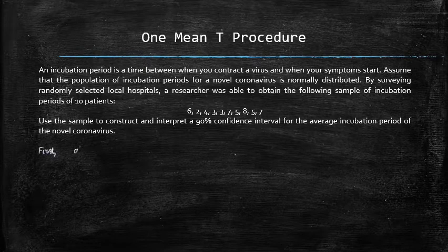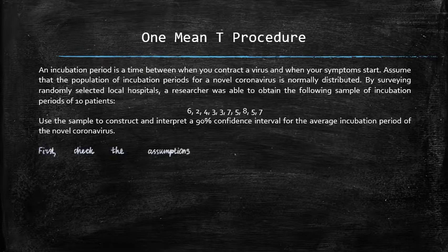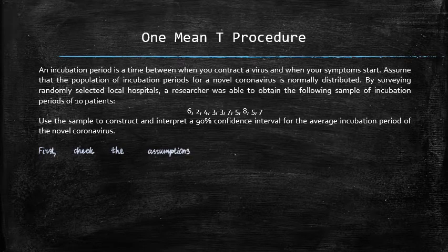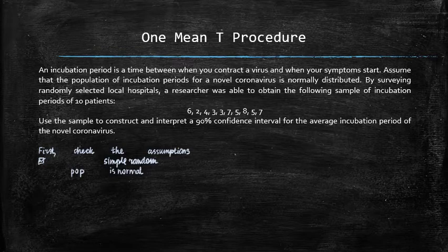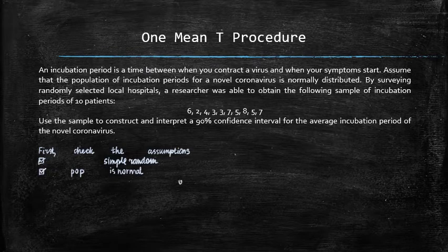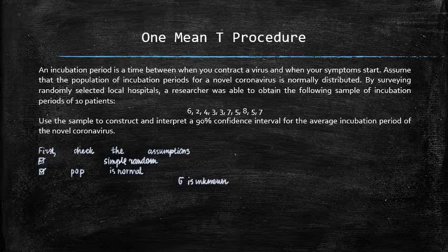First, let's check if all necessary assumptions are satisfied. The sample is simple random. Check. The population is normally distributed. Check. The population standard deviation sigma is unknown. Check.